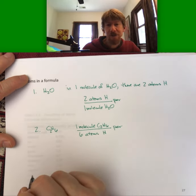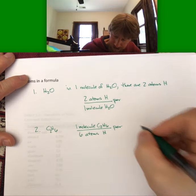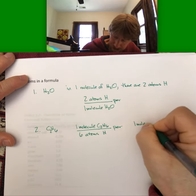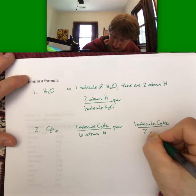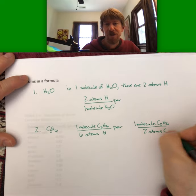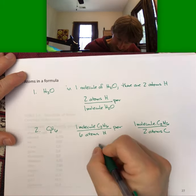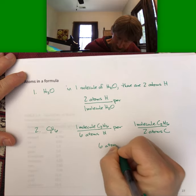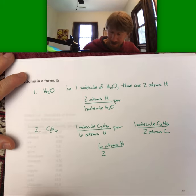And we can also get one molecule C2H6 per two atoms carbon. And there's a third one, six atoms of hydrogen per two atoms of carbon.